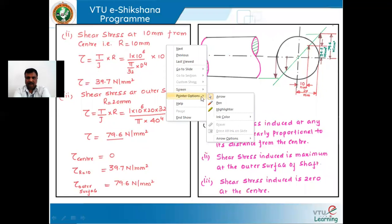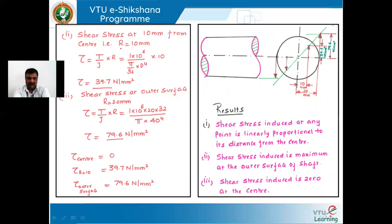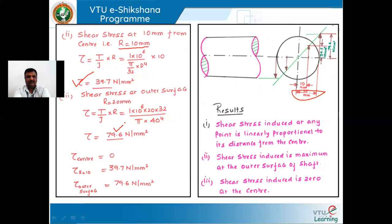Shear stress at 10 mm from the center: r = 10 mm. Using τ = (T/J) × r, with T = 1 × 10⁶ N·mm and J = πd⁴/32 for solid shaft, substituting r = 10 mm gives τ = 39.7 N/mm². Shear stress at the outer surface: r = 20 mm (radius of 40 mm shaft). Substituting r = 20 mm with everything else unchanged gives τ = 79.6 N/mm².